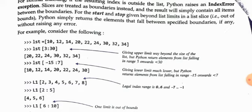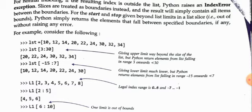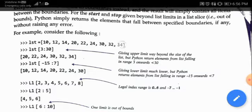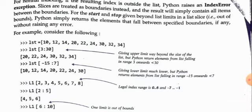Here we have a list with elements 10, 12, 14, 20, 24, 30, 34. If we write list[3:30], the starting index is 3 and it should go to index 29. Index 3 corresponds to element 20. Since there is no 29th index — we only have indices 0 through 8 — it takes all elements from index 3 to the last. The result is 20, 22, 24, 30, 32, and 34.